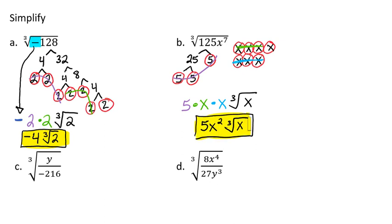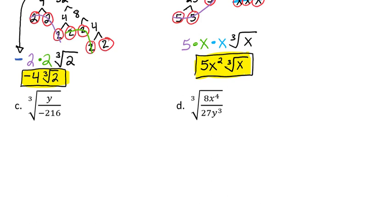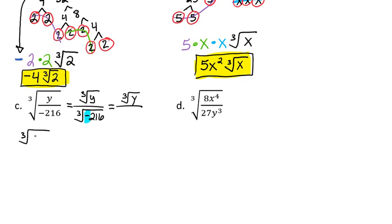Let's do another example involving quotients. For letter C, we have the cubed root of y divided by negative 216. We can follow our quotient property and split it apart as the cubed root of y over the cubed root of negative 216. Remember, that negative sign is okay because we're dealing with a cubed root. Since y is a single y, the cubed root of y stays as is. We do need to break down the cubed root of negative 216 — so we'll save that negative sign and bring it down to our final solution, then break apart the 216.